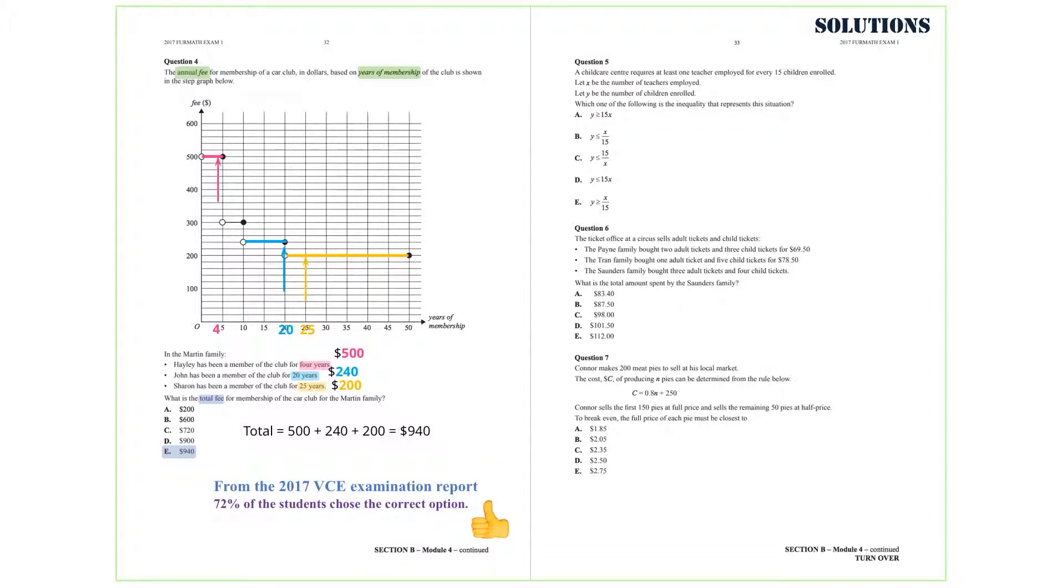Question 5. A childcare centre requires at least one teacher employed for every 15 children enrolled. If X is the number of teachers employed, and Y is the number of children enrolled, which one of the following is the inequality that represents this situation?